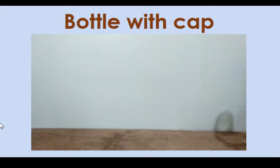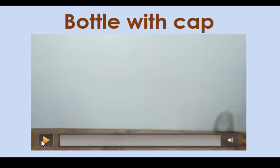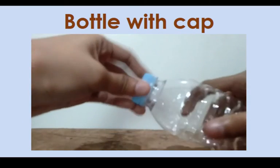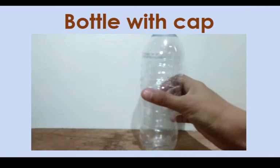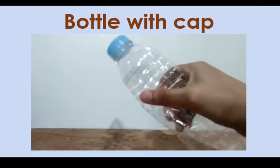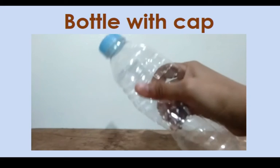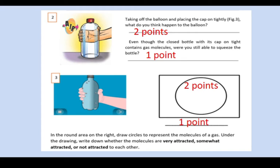For the next setup, we have a bottle with a cup. Taking off the balloon and placing the cup on tightly, what do you think happens to the bottle? Even though the closed bottle with its cup on tight contains gas molecules, were you still able to squeeze the bottle? Yes or no? On the round area on the right, draw circles to represent the molecules of a gas. And under the drawing, write down whether the molecules are very attracted, somewhat attracted, or not attracted to each other.